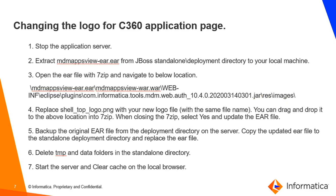Now we will see how to change the logo for the C360 application page. Stop the application server. Extract mdmapps.ear from the JBoss standalone deployments directory to your local machine. Open the EAR file with 7-zip and navigate to the below location. Replace shell_top_logo.png with the new logo file. You can drag and drop it to the above location in 7-zip. While closing 7-zip, select yes and update the EAR.